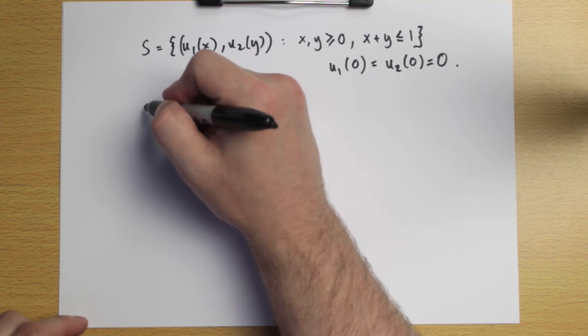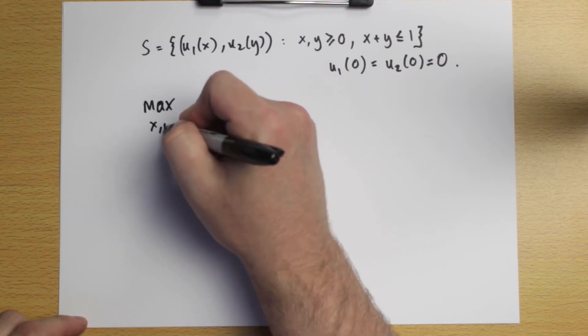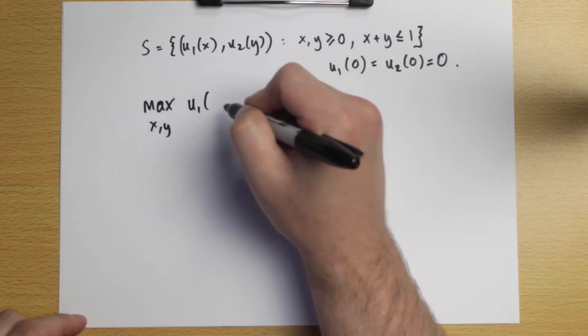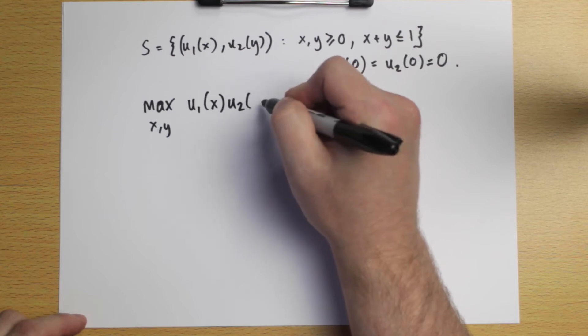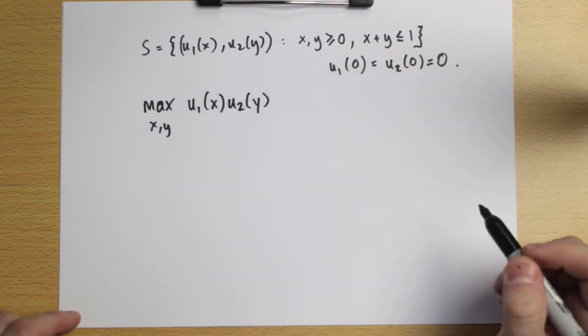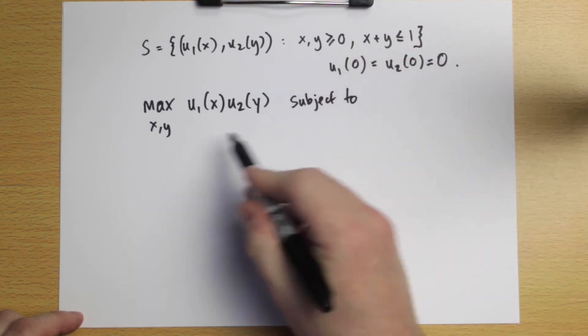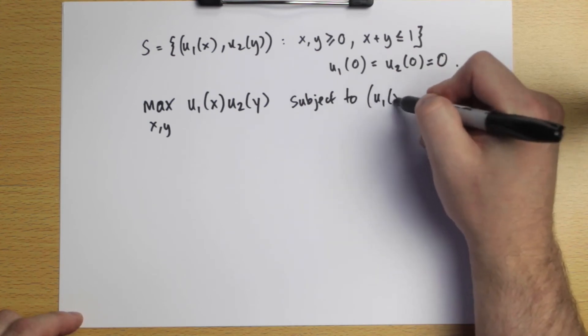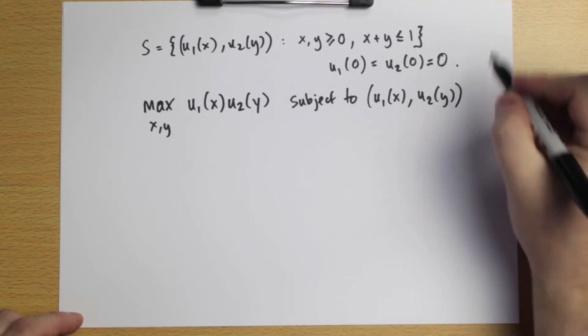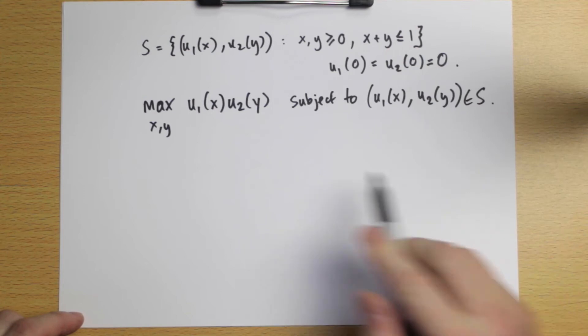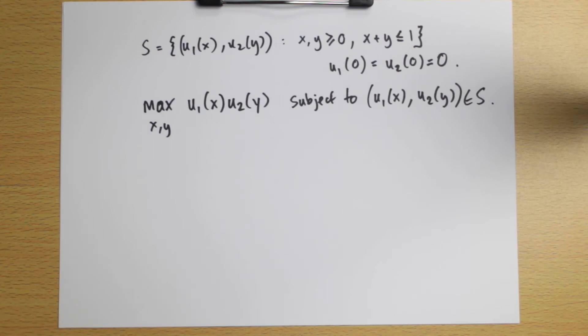So how do we apply the Nash bargaining solution to this problem? We need to find the pair. We're going to maximize by choosing an X and a Y the Nash product, so the utility of player one of the amount X, the utility of player two of the amount Y, multiply them together, subject to this pair of numbers belonging to our set S, or we could just write subject to the condition X plus Y is less than or equal to one and X and Y are non-negative.